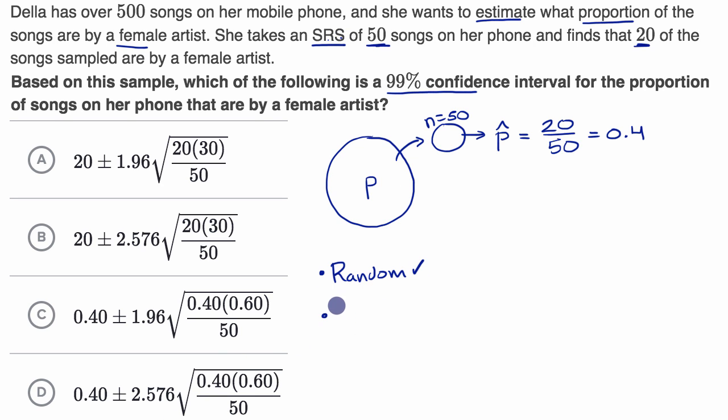The next condition is to assume that your sampling distribution of the sample proportions is approximately normal. You want to see that in your sample you have at least 10 successes and at least 10 failures. Here we have 20 successes and 30 failures, so both of those are more than 10.